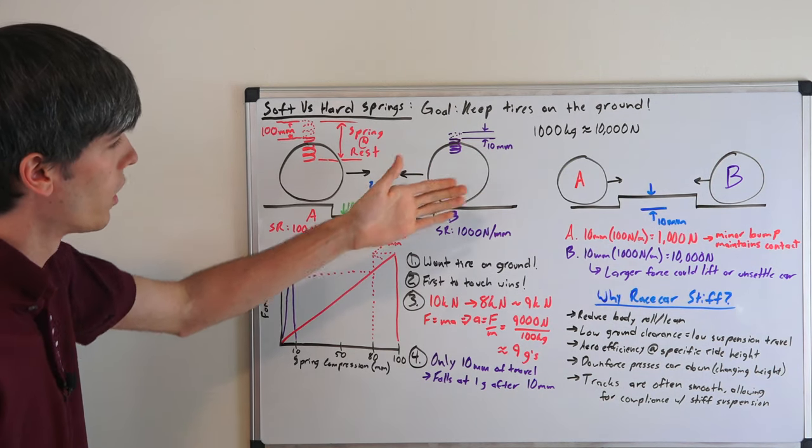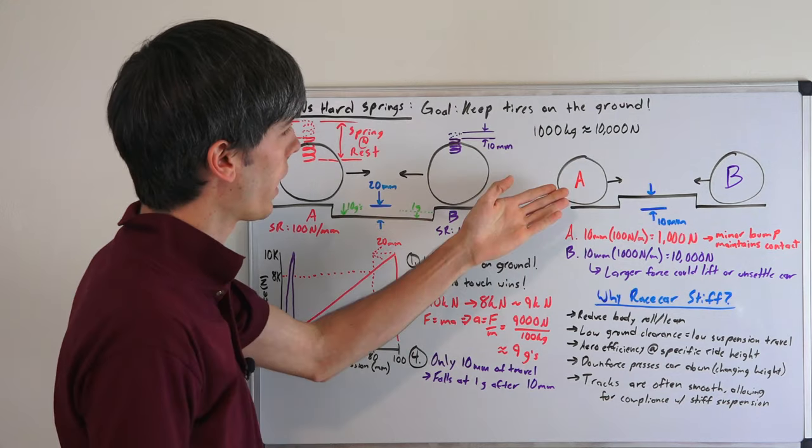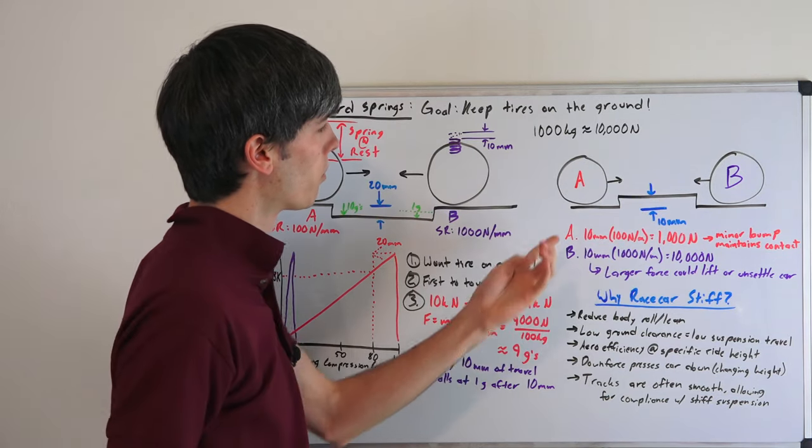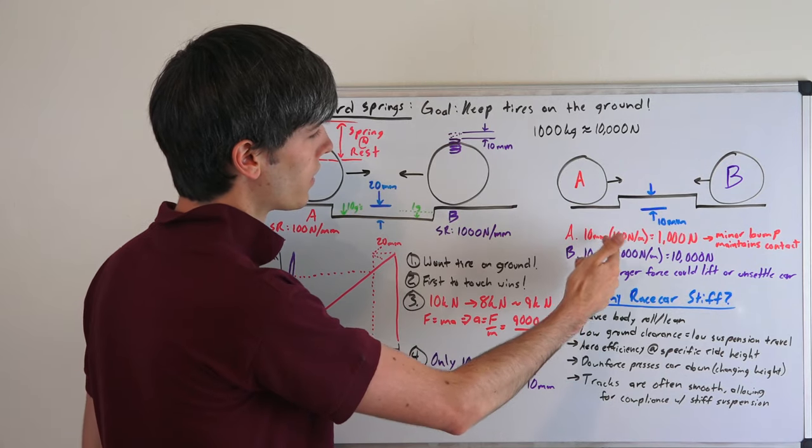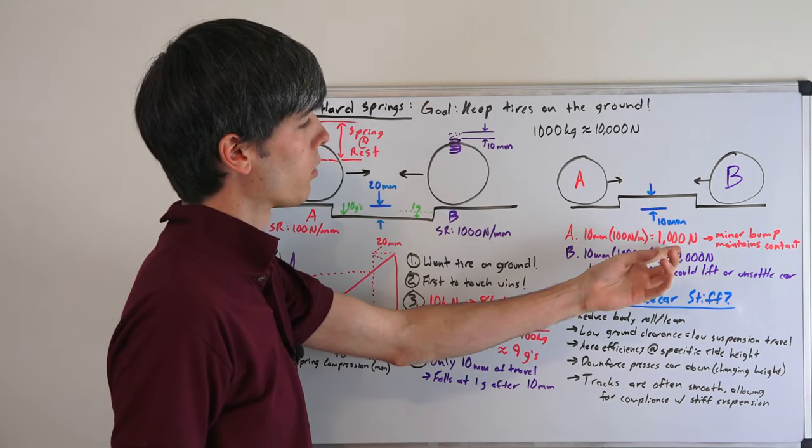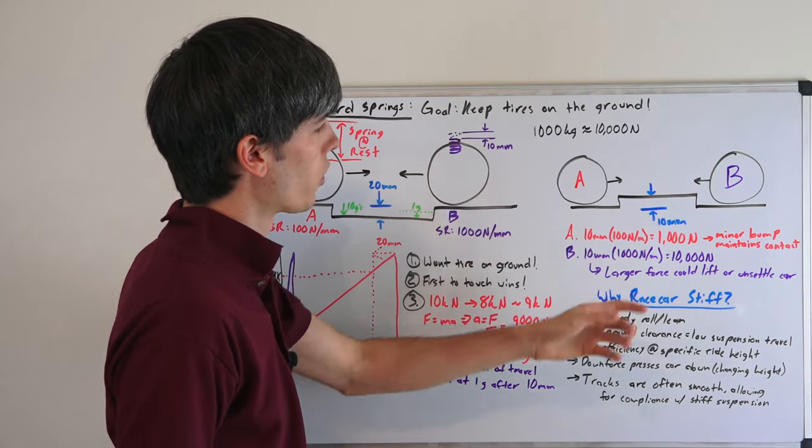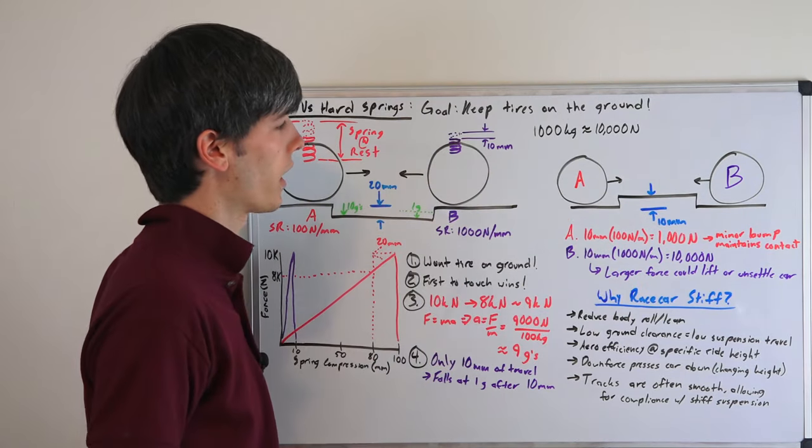Same scenario if we move over here to a bump. So if we have a tire A and that's about to hit a 10 millimeter bump, well, to compress the spring 10 millimeters, 10 times 100 newtons per millimeter, it requires 1,000 newton force to travel through that spring. So this will be a minor bump and the wheel will maintain contact, the tire maintains contact with the ground.